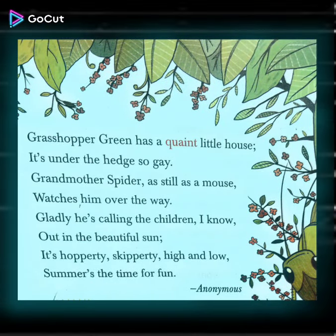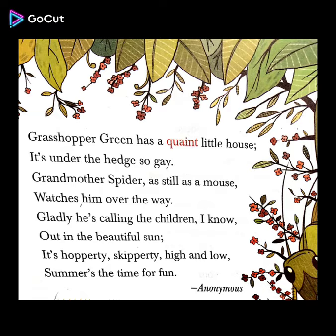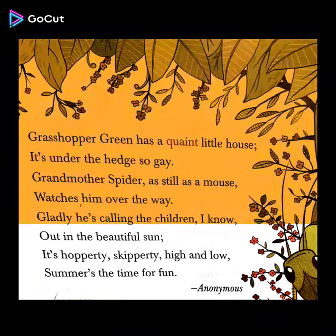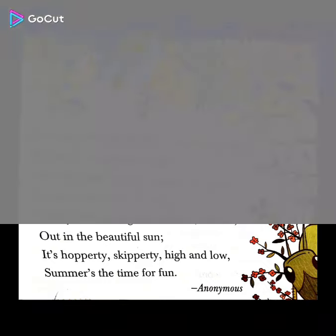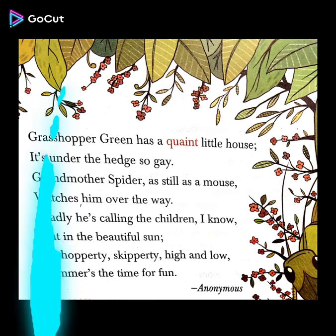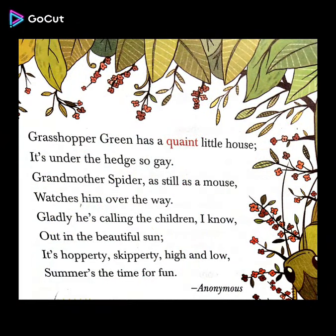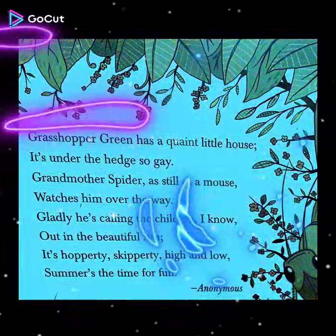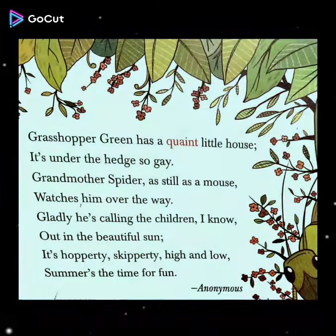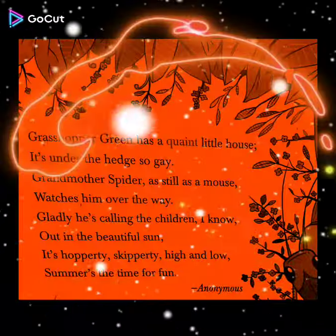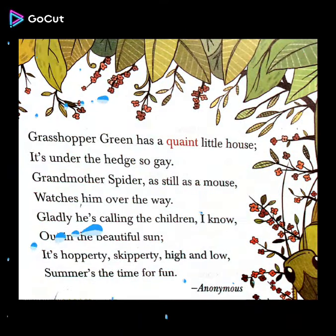So in the second verse the poet is saying that Grasshopper Green has a charming little house that is under a hedge. Hedge means a fence made of bushes or shrubs. The grandmother spider, who is still as a mouse, watches the grasshopper — because the spider used to eat the grasshopper, which is probably why she is watching him. The grasshopper calls the children out in the beautiful sunshine as he hops along hopperty skippity, because summer is the time for fun.